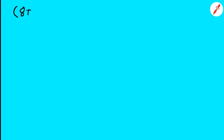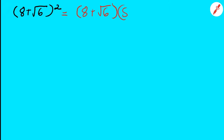Now we're going to be multiplying 8 times the square root of 6 squared. This is tricky — don't let it fool you. This is going to be 8 plus the square root of 6 times 8 plus the square root of 6.